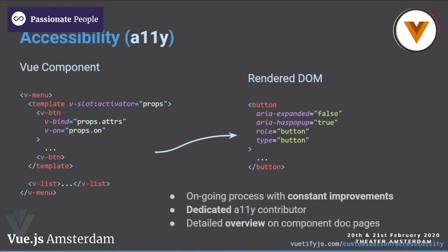We've also started providing more information in the documentation on specific components. For example, if you have a banner — which is a new Material Design 2 component — and you want to understand how its accessibility is configured, we now explain what we use, why we use it, and the information regarding it. The goal is to empower developers to not only use these features but understand why they're there.